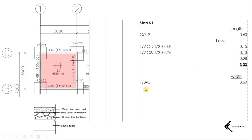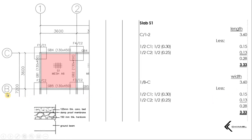Seterusnya dapatkan width. Kita akan merujuk kepada width pada grade line 1BC dengan jarak center to center nya adalah 3600mm — tuliskan 3.6 meter di sini dan dapatkan jumlah penolakan bagi column stump yang terlibat. Kita rujuk kepada 1B, di situ terdapatnya C2, jadi kita kena tolak dengan separuh C2. Dan pada grade line 1C pula terdapatnya C2. Dapatkan jumlah penolakan dan tolakkan daripada 3.6 — dapatlah jawapan kita di sini 3.33 meter.